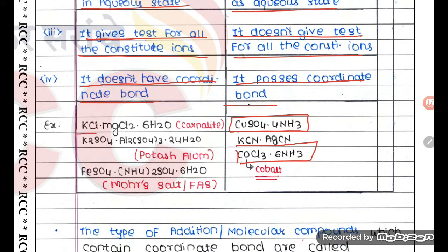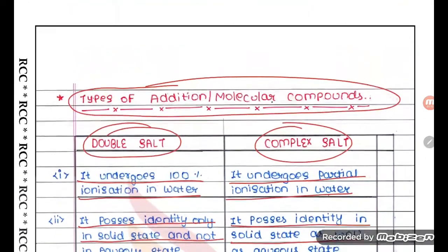An example of a double salt is KCl·MgCl2, known as carnallite. These are examples of double salts. So this is the difference between the two, students.